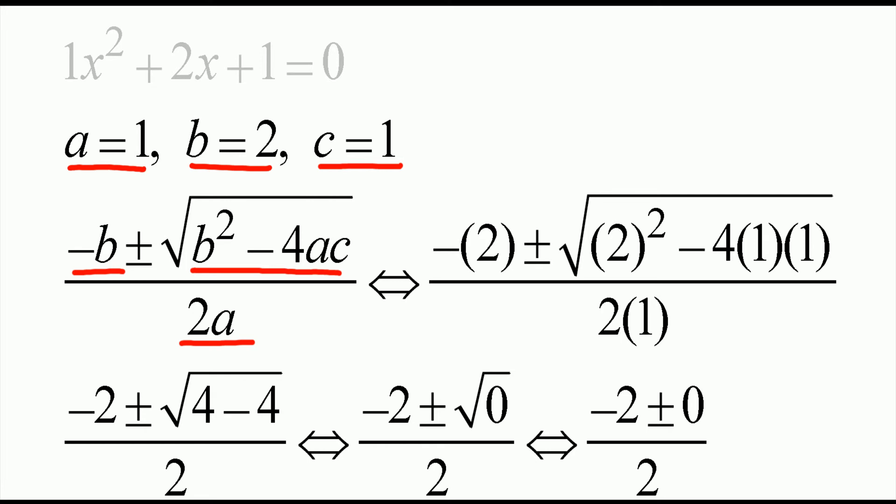So we substitute for b. What is b? 2. So what is negative b? Negative 2. So this is b. And then we have b² minus 4ac divided by 2a.